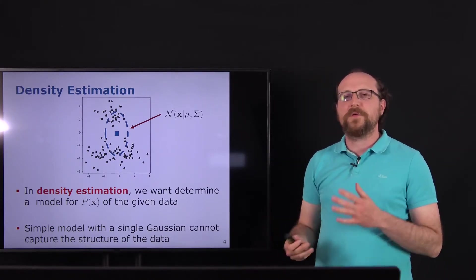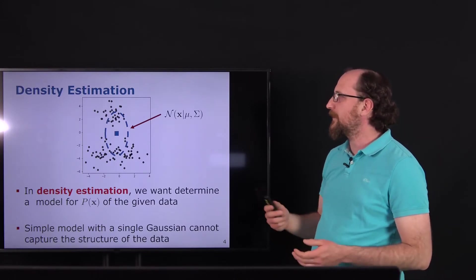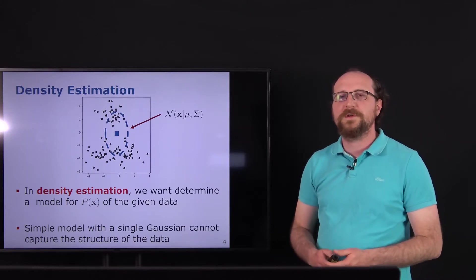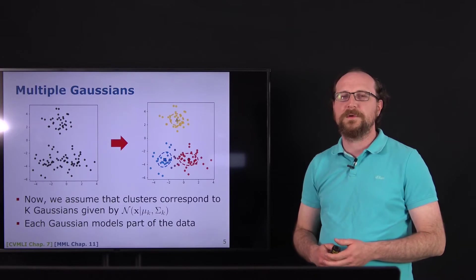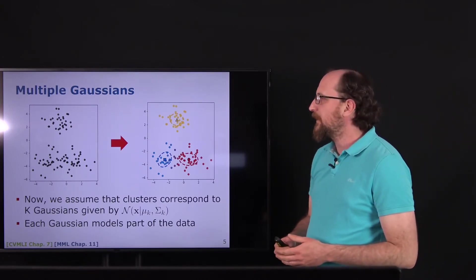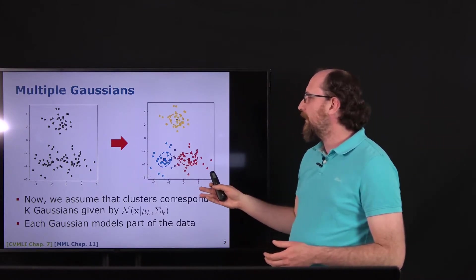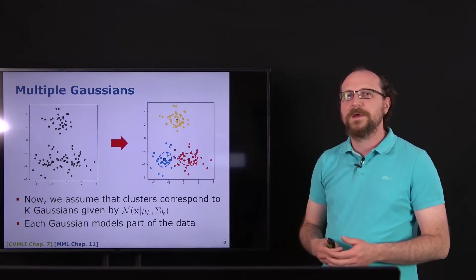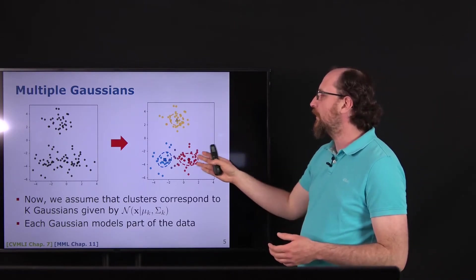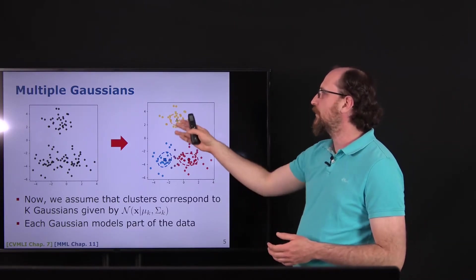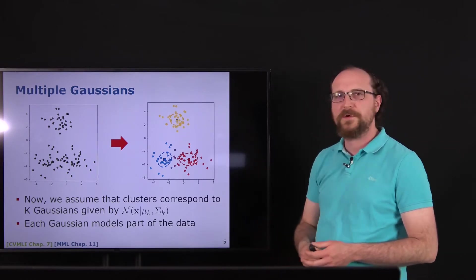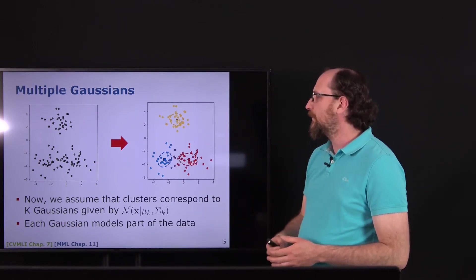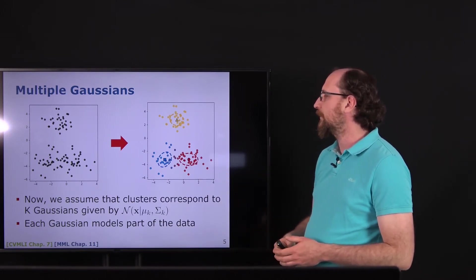Instead of using one single normal distribution to model the data, a good idea is to use multiple Gaussians. We see the data and want to represent it by multiple normal distributions. The color indicates to which normal distribution each point mainly corresponds: yellow points correspond to the yellow normal distribution with its mean and covariance, blue points to the blue normal distribution, and red points to the red normal distribution.